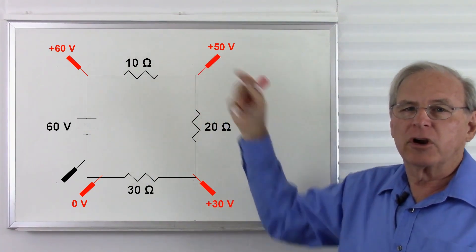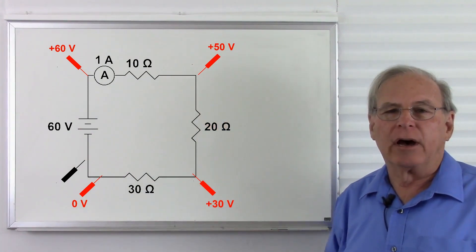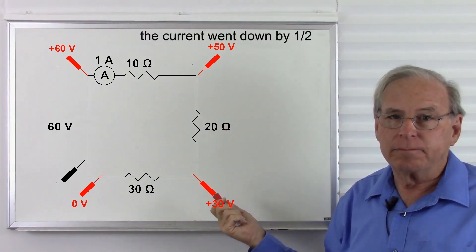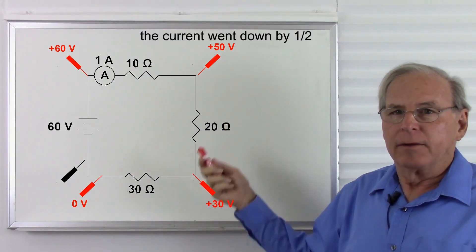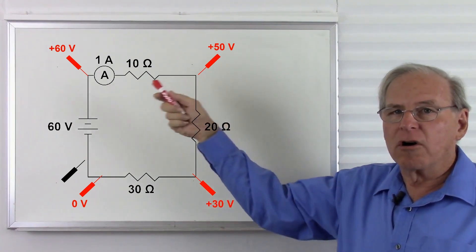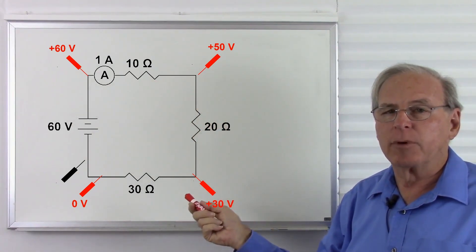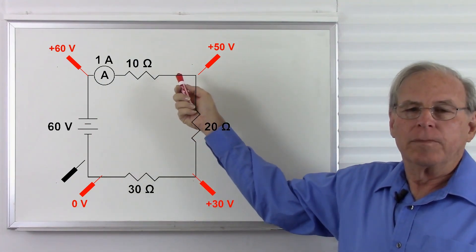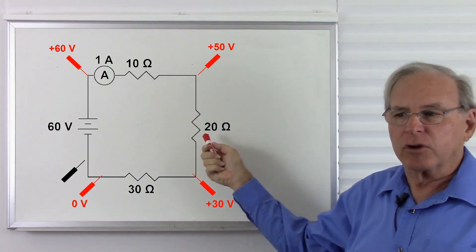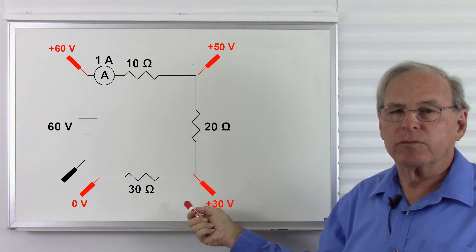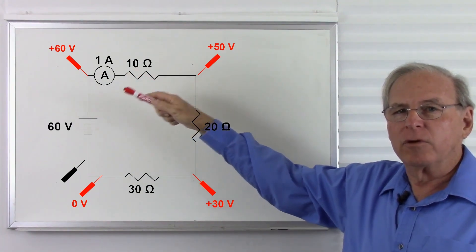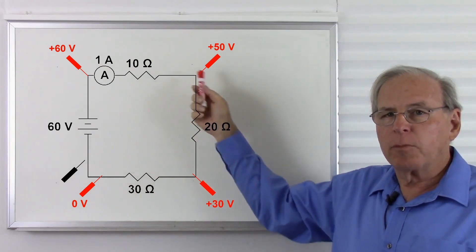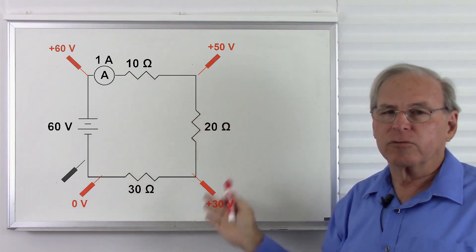Let's put a current meter in and see what happened — now we're down to one amp of current. We doubled the resistance, so our current went down by half. But our voltages stayed the same. So as long as the resistors stay the same proportions, our voltages will stay the same proportions. I can increase these to 5,000 ohms, 10,000 ohms, 15,000 ohms, and the voltages will still be 60 volts, 50 volts, 30 volts, zero — as long as the proportions stay the same, the voltages will stay the same.